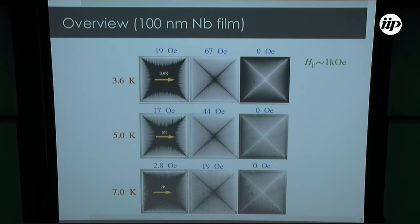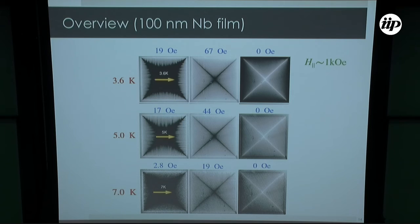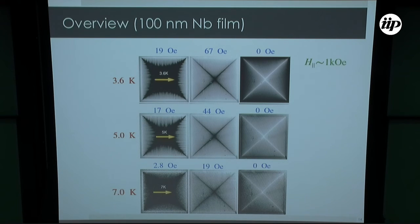When we measure the 100 nm thin film, we do not see this anisotropy for the same applied in-plane field. Measurements at 3.6K, 5K, and 7K show no avalanches and no anisotropy in all cases.